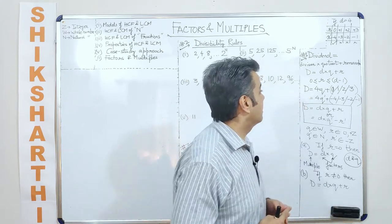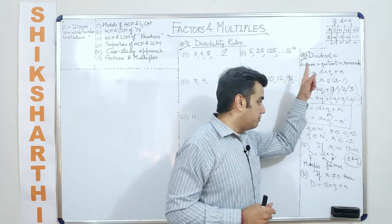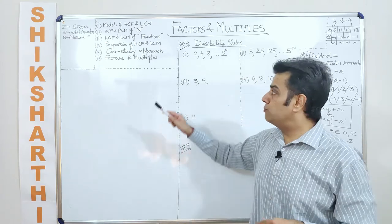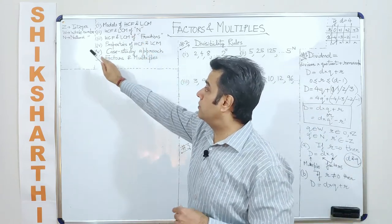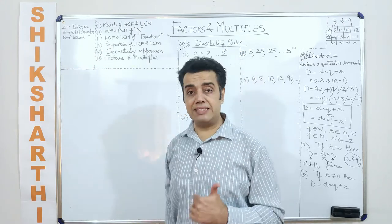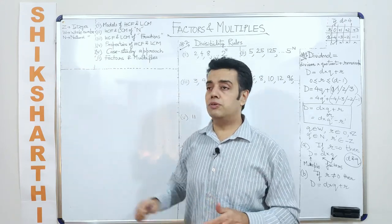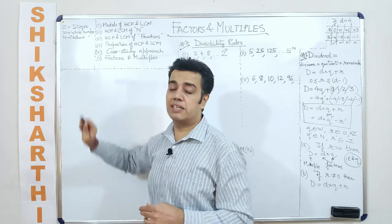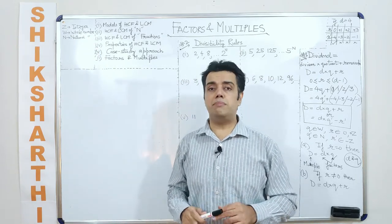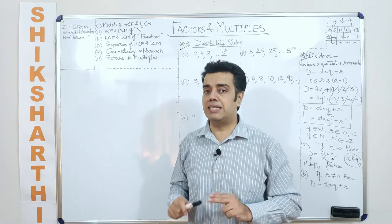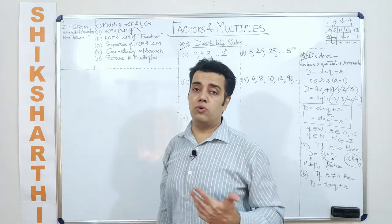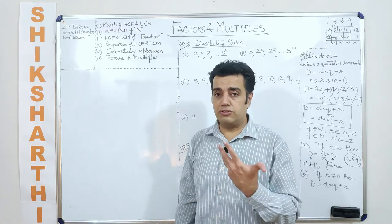Now in the very beginning, before we begin the discussion, there are a few points I have written here. Anywhere I write Z, as discussed earlier, Z means I'm talking about an integer. Plus Z means a positive integer. Minus Z means a negative integer. When I write W, it means a whole number — whole numbers are 0, 1, 2, 3, 4 and so on.